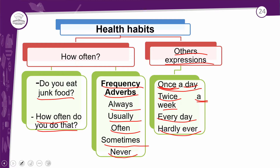E, claro, as frequency adverbs que estamos falando: always significa sempre. Usually — aquela que vem depois — é o meu geralmente, quando uma coisa tem uma certa frequência. A terceira foi often, que significa muitas vezes ou frequentemente. Sometimes, que significa algumas vezes. E never, que é o bem oposto de always — que é nunca. Traduzido, muito simples, muito prático. Essa aula foi basicamente sobre isso.